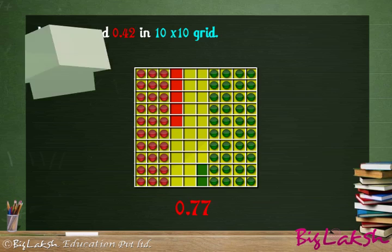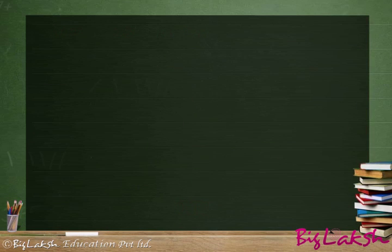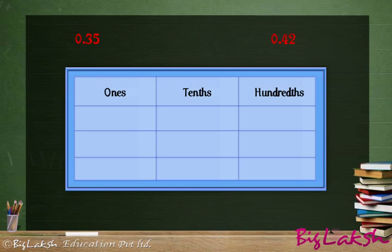Now let us see this in a place value chart. In this chart we put 3 at the tenths place and 5 at the hundredths place. In 0.42 we put 4 in the tenths and 2 at the hundredths place. We will start addition from the right as usual.